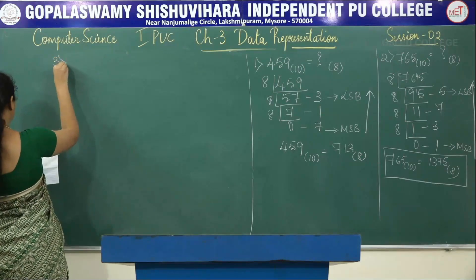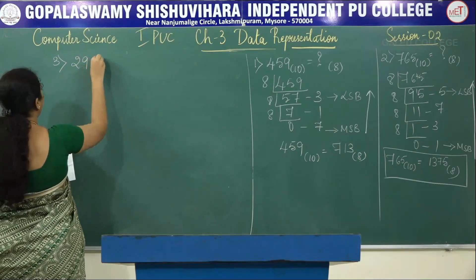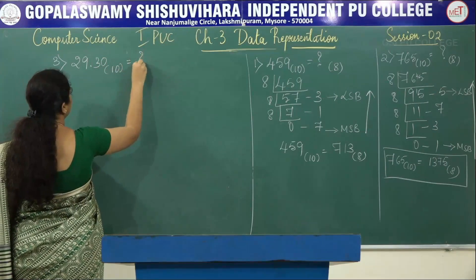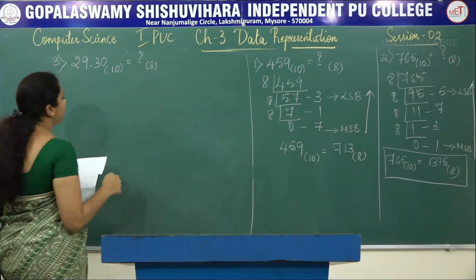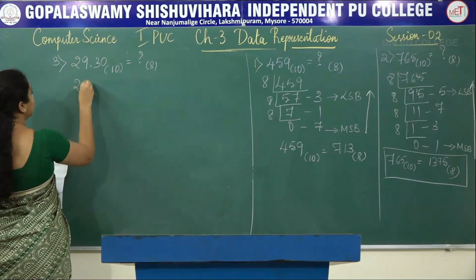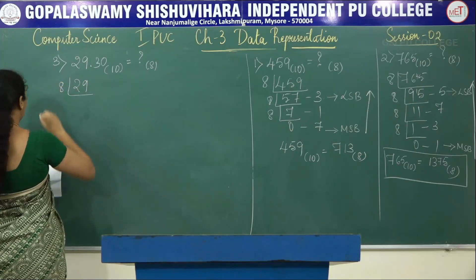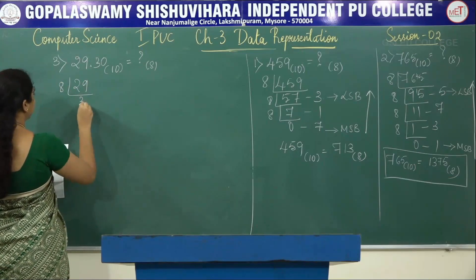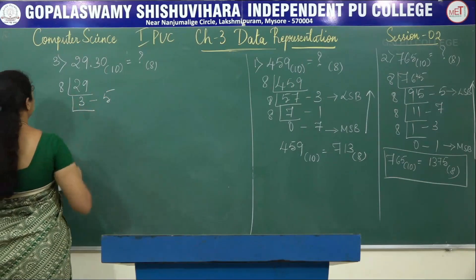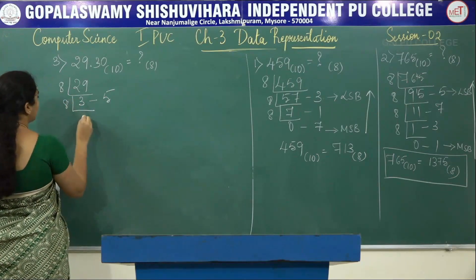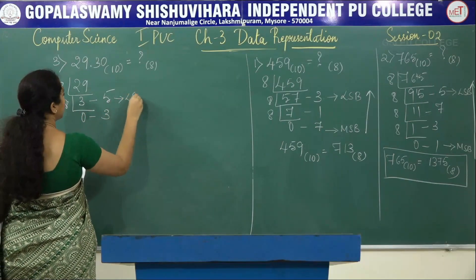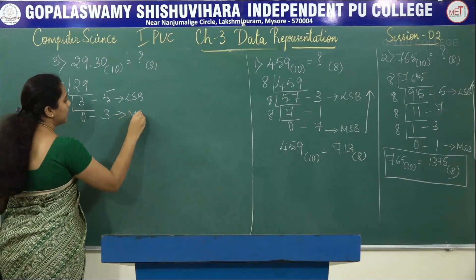Third problem: 29.30 base 10. First, divide the integer part 29 by 8: 8 × 3 = 24, remainder 5. Then 3 ÷ 8: quotient 0, remainder 3. This gives us our LSB and MSB for the integer part.